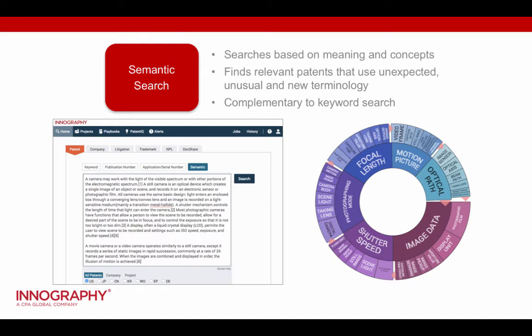If you do a semantic search for 'camera,' it will pull up patents with things such as 'image capture device' and even 'photographic optical apparatus.' There are really dozens and dozens of types of key phrases that will be derived from finding the concepts and meaning behind the word 'camera.' As a result, it finds relevant patents that use unexpected, unusual, and new terms.